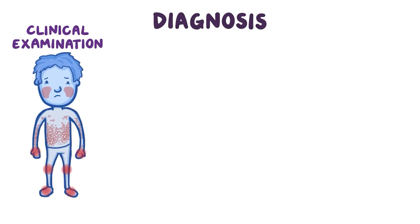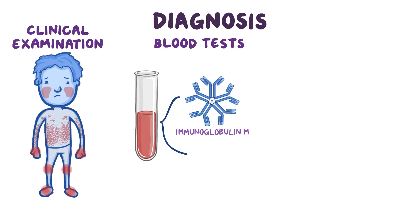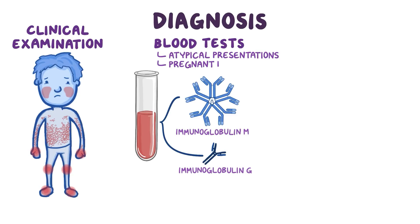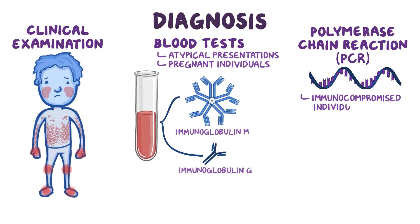Parvovirus B19 infection is usually diagnosed by clinical examination. Blood tests looking for antibodies to the virus — specifically immunoglobulin M and immunoglobulin G — are reserved for atypical presentations of the virus and for pregnant individuals. Another option is polymerase chain reaction, or PCR, which looks for viral DNA. It's the preferred diagnostic method for parvovirus B19 infection in immunocompromised individuals, who typically do not have high IgM or IgG levels in response to an infection. PCR can also be used on amniotic fluid to diagnose infection in a fetus.